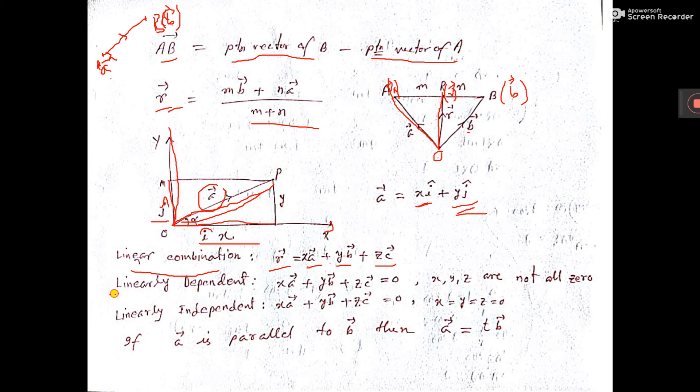Now, linearly dependent means x a plus y b plus z c equal to 0, where x, y, z are not all 0. But together, this value becoming 0, where x and y and z are scalar. Not all 0—some of them may be 0.